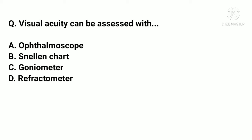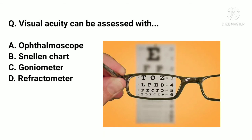Visual acuity can be assessed with which tool? Options: A. Ophthalmoscope, B. Snellen chart, C. Goniometer, D. Refractometer. The correct answer is B. Snellen chart.